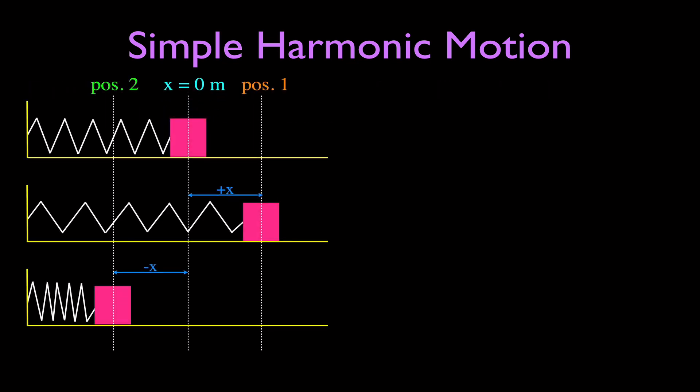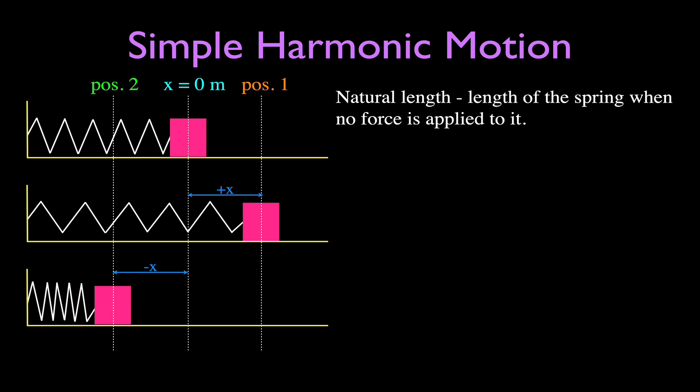Now let's look at some important terms. The first is the natural length of the spring — the length of the spring when no force is being applied to it. For example, if you take a spring, attach a mass to it, lay it on a table, and attach one end to a wall, the natural length is just the resting length of the spring. You're not pulling it, compressing it, extending it, or squeezing it.